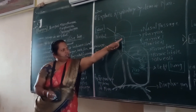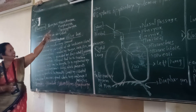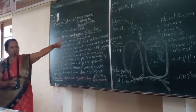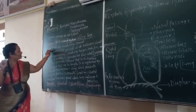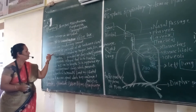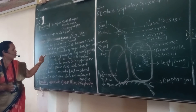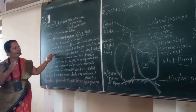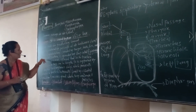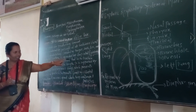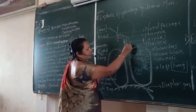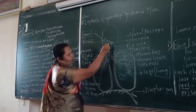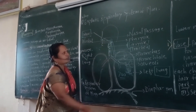Pharynx is the common passage of air and food. It consists of nasopharynx, oropharynx, and laryngopharynx. Larynx is the sound box or voice box. Larynx consists of vocal cords which produce sound. Sound is produced by the passage of air between vocal cords and modulations by the teeth, tongue, and nasal passage. The opening of the larynx into the trachea is guarded by a flap called the epiglottis, where the air passage and food passage cross.